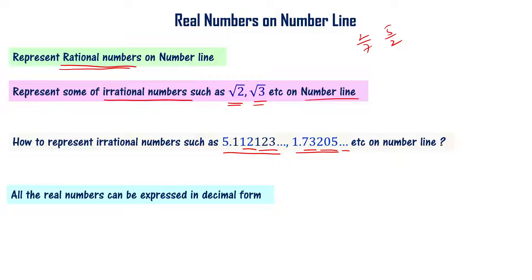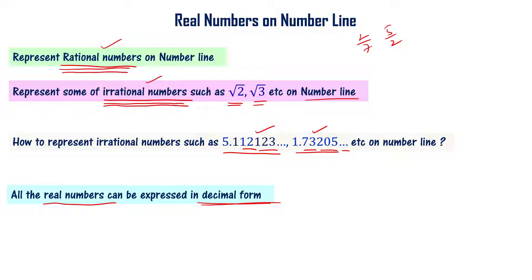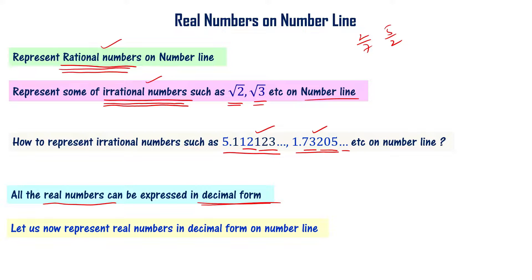We know that all real numbers can be expressed in decimal form. Rational numbers in decimal form are either terminating decimals or non-terminating recurring decimals. Irrational numbers are non-terminating non-recurring decimals. So all real numbers — whether rational or irrational — can be expressed in decimal form.